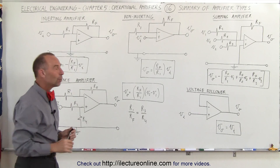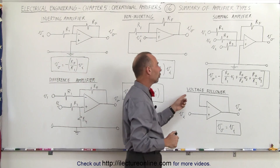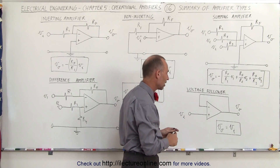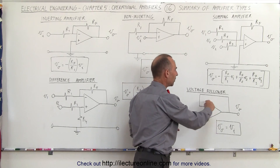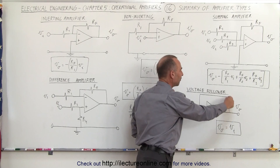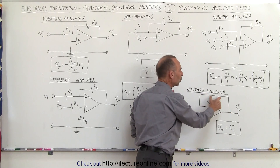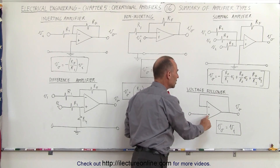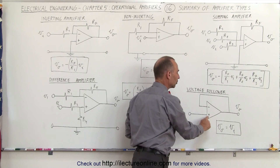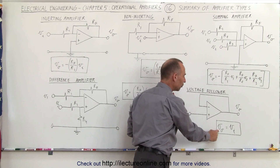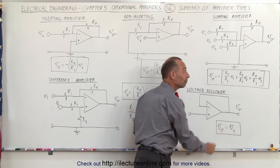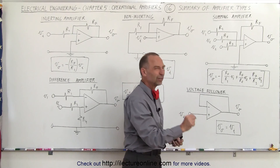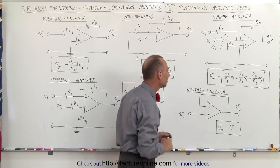Finally, one we haven't seen yet is called the voltage follower, which we'll see in the near future. We have an operational amplifier with a feedback but no resistor on the feedback, and the input voltage is connected to the non-inverting terminal. In this way the output voltage will be exactly equal to the input voltage. You may ask why we do it like that — there are reasons and we'll see those later.